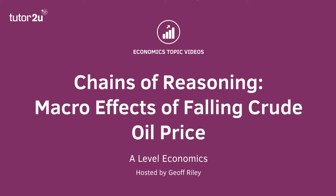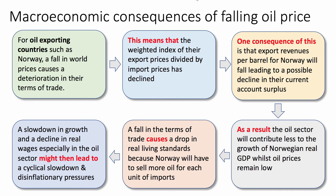Let's look at two examples of a chain of reasoning on this question: the macroeconomic effects of a falling price of crude oil. Notice how at the start I make it clear what type of country I'm referring to. For oil exporting countries such as Norway, a falling world price causes a deterioration in their terms of trade — a macro concept. This means that the weighted index of export prices divided by import prices has declined, defining the term and showing how it's measured.